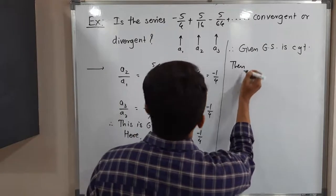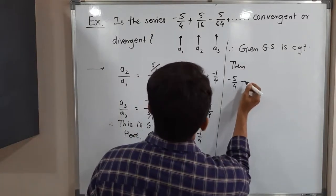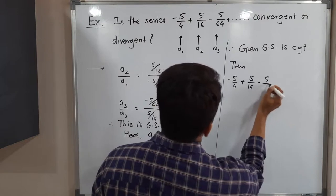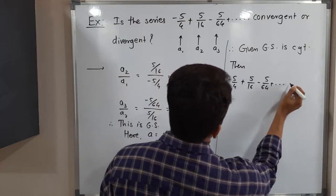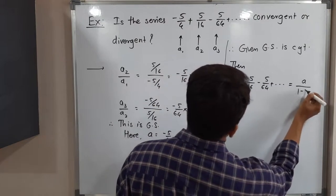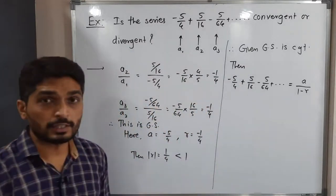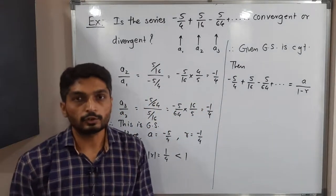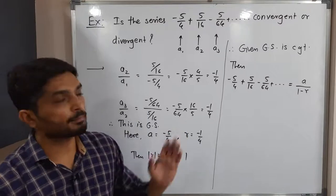Let us find its sum also. Minus 5 by 4 plus 5 by 16 minus 5 by 64 plus and so on. The sum is A upon 1 minus R. So we have a fixed formula. If the given geometric series is convergent, the sum is A upon 1 minus R.